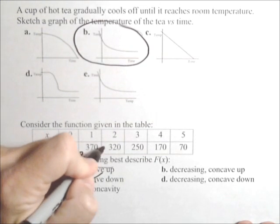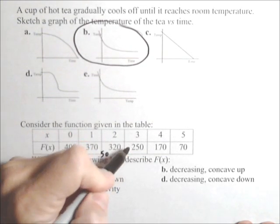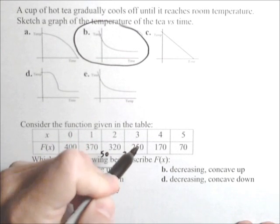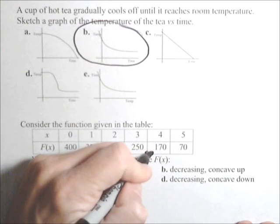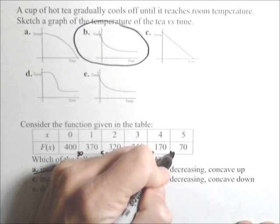So let's maybe make a note of this. 30, then it goes down by 50. Then it goes down by 70. Then it goes down by 80. Then it goes down by 100.